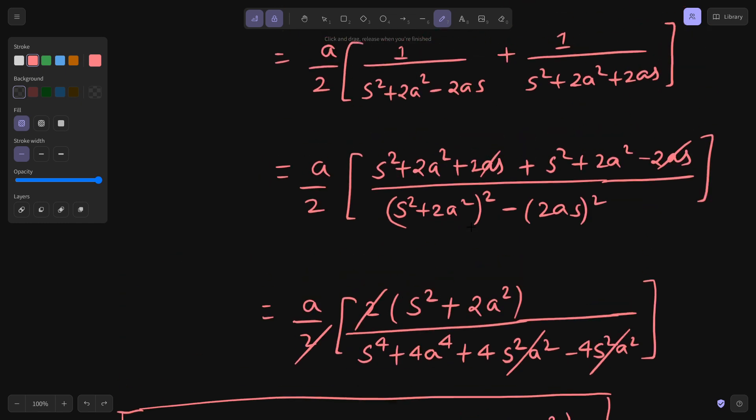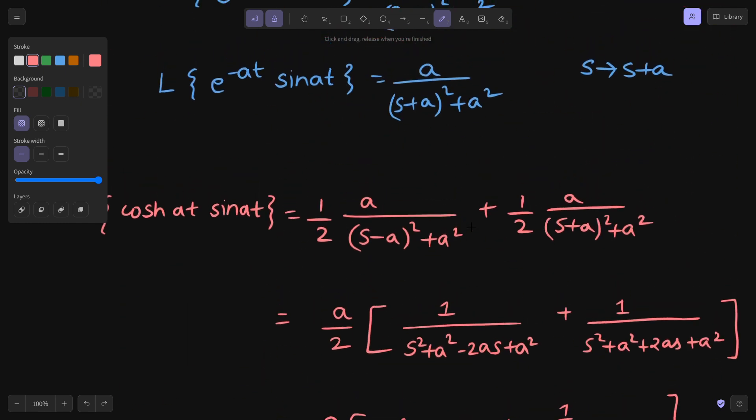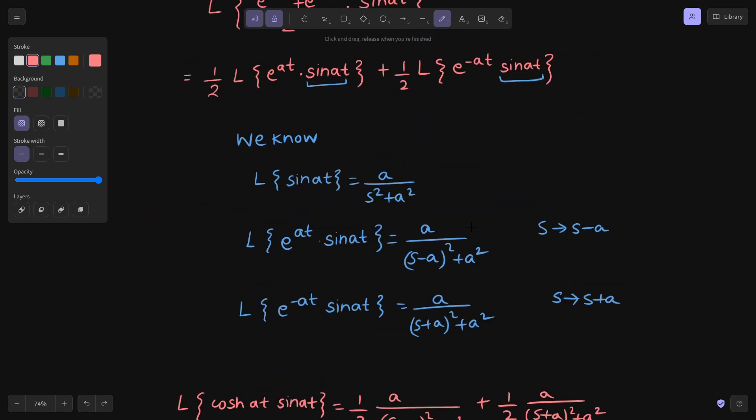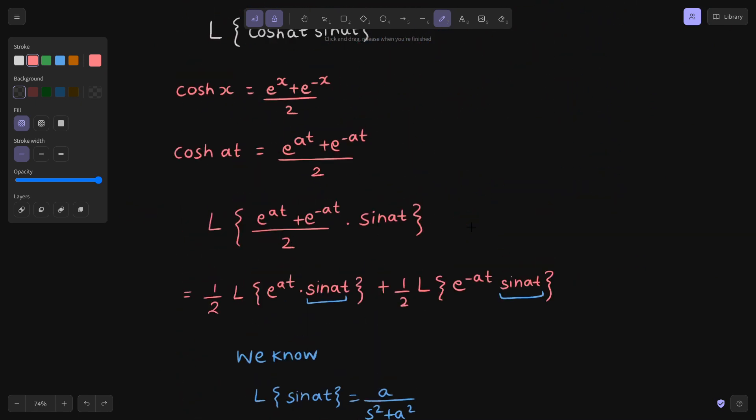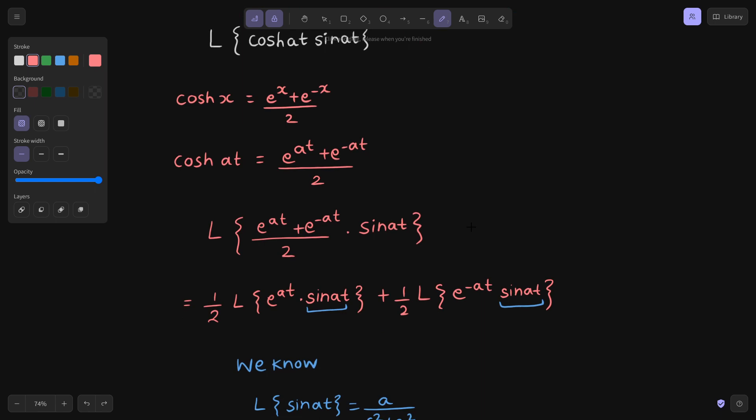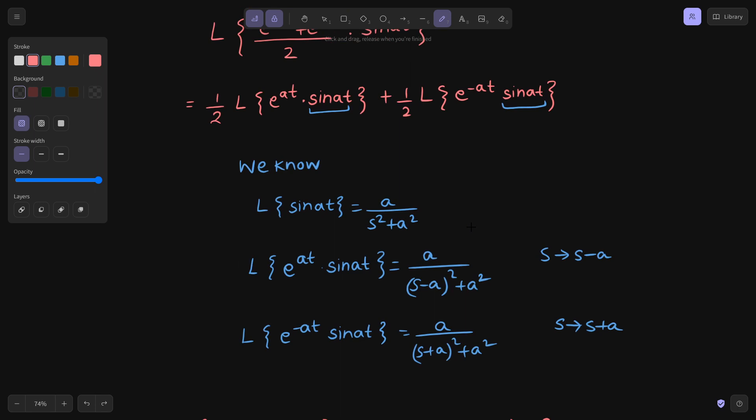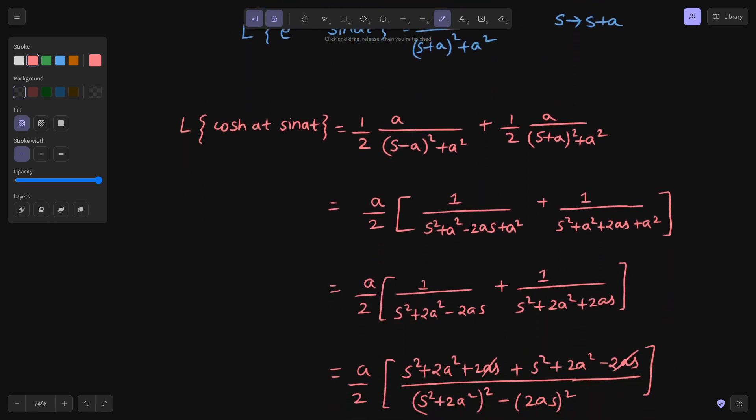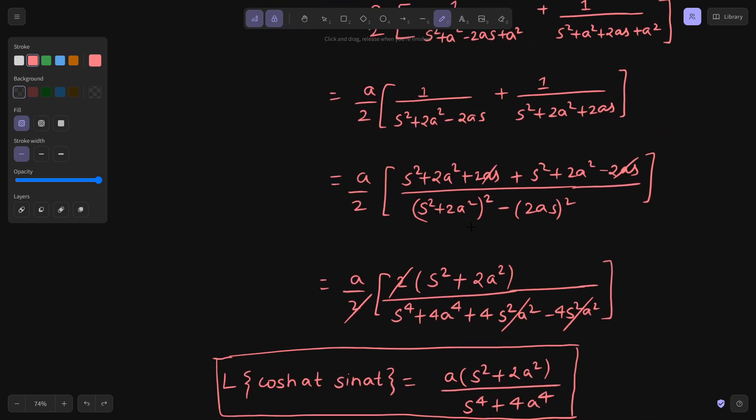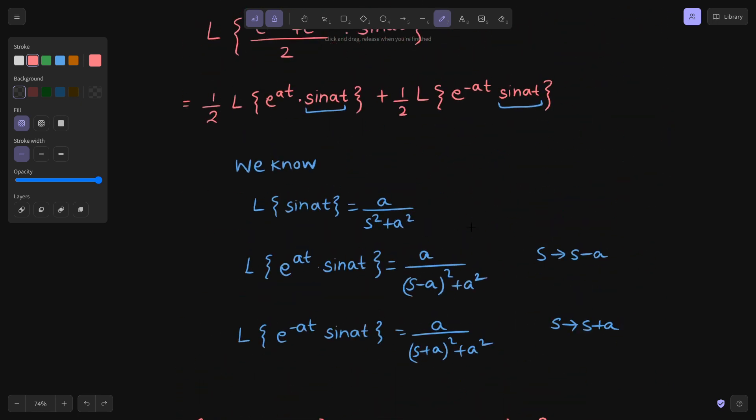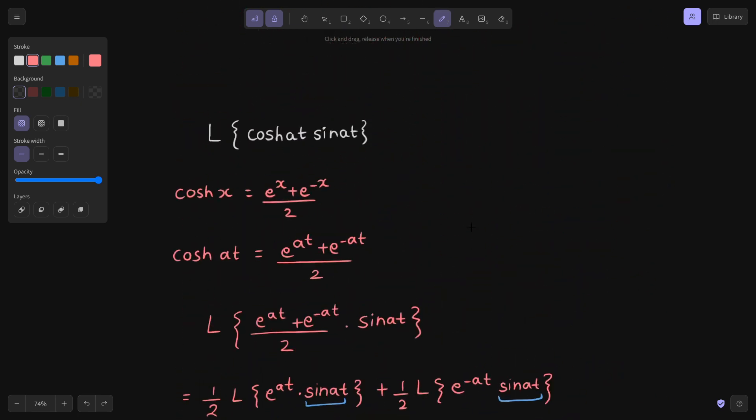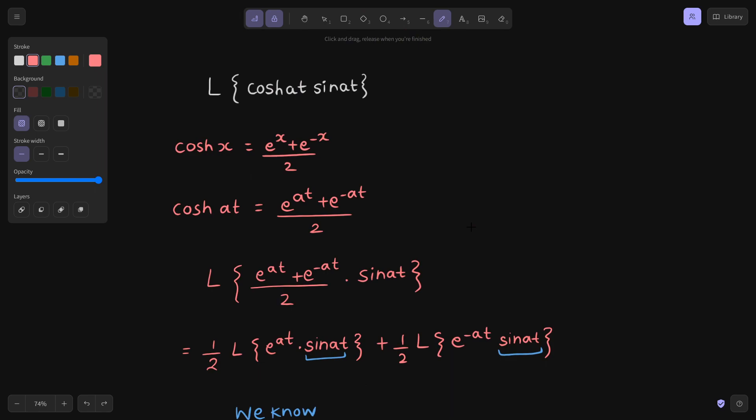Most of the people had the confusion as to how they can simplify it only. Most of us have solved it to some extent but simplification was a bit of a problem. But if you break this into pieces, then what we did: we first wrote the hyperbolic cos in terms of exponential, then we separated, then we knew the Laplace transform of sine at, then we applied first shift on both the terms and then we just simplified. That's it for today. I have solved a large number of problems on Laplace transform which you can watch in the playlist Laplace transform. Thanks again.